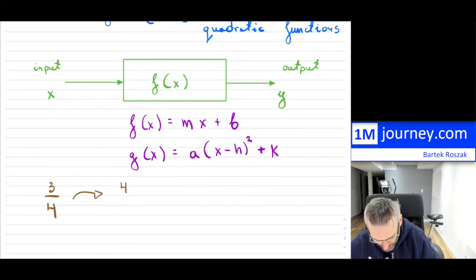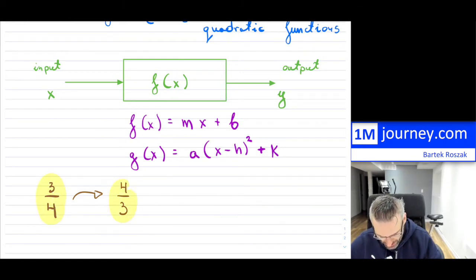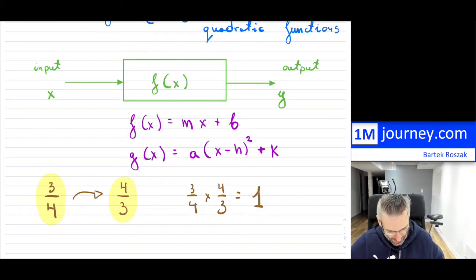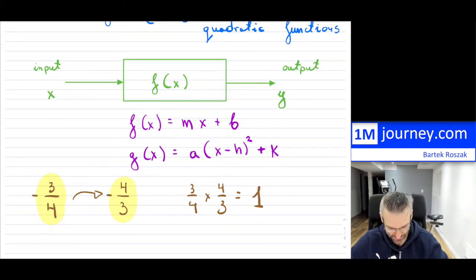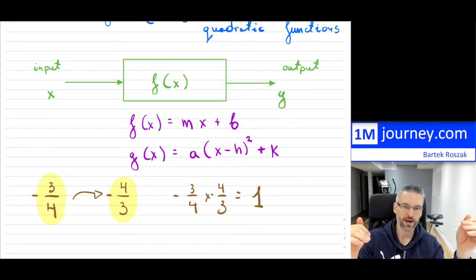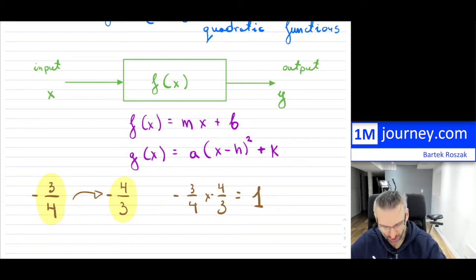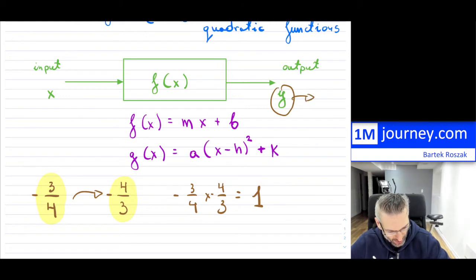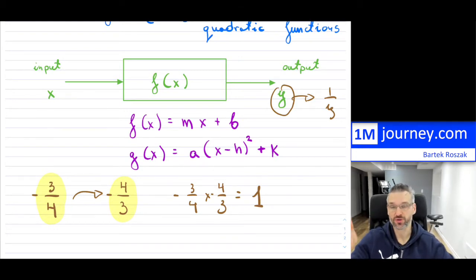If we have a fraction and we want to find its reciprocal, all we would do is swap the numerator and the denominator. The key idea was that when you multiply the original fraction by its reciprocal — so three over four multiplied by four over three — the answer is always going to be equal to one. If your original one is negative, the reciprocal also has to be negative, because the two negatives cancel out to give you one back. So for functions, you have some input X, get your function, get your output Y, and the reciprocal output would simply be one over Y.